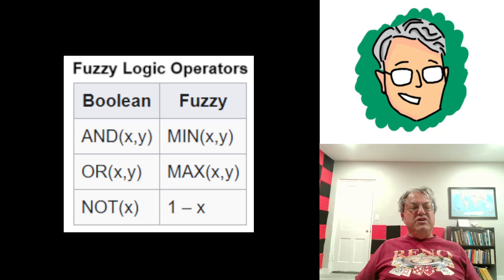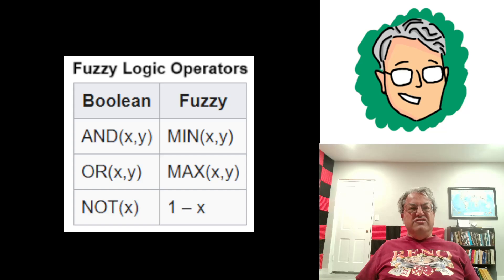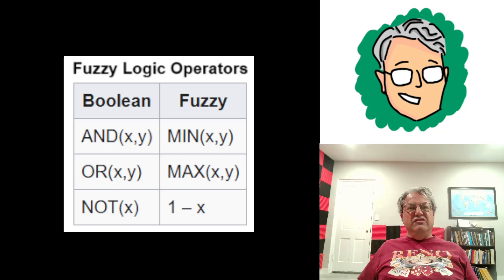In fuzzy logic we generalize that by taking the minimum. Say you're asking: 'Is it hot in Denmark, and is it hot in Las Vegas?' Maybe it's 30 degrees in Denmark and 80 degrees in Las Vegas. So the truth value of being hot in Denmark might be 0.1, but the truth value of being hot in Vegas is 0.9. You take the minimum — that's 0.1. It's not hot in both. That makes sense: it's hot in Vegas, but that doesn't make it hot in both.